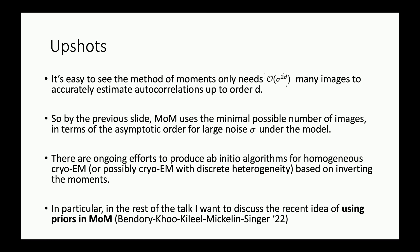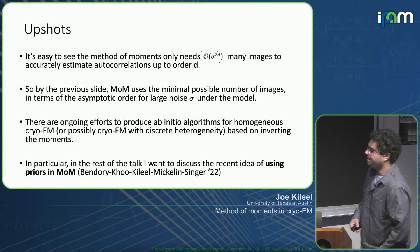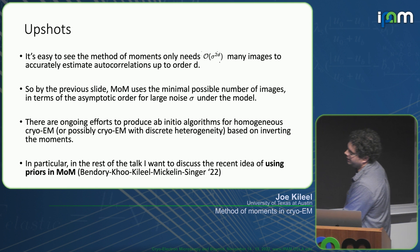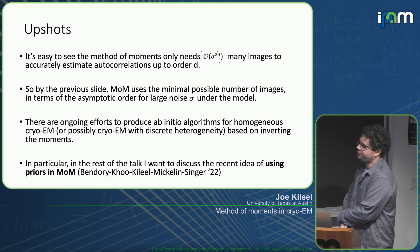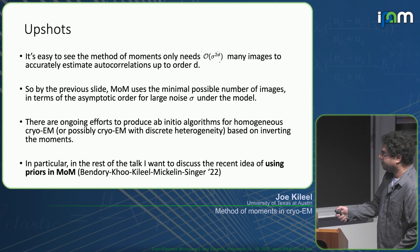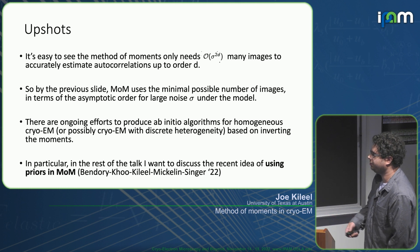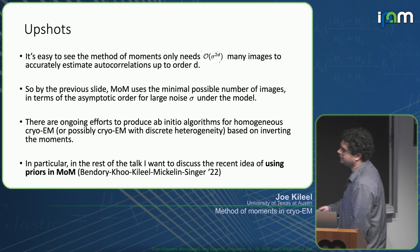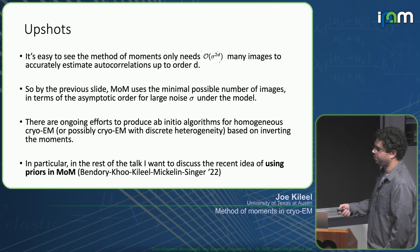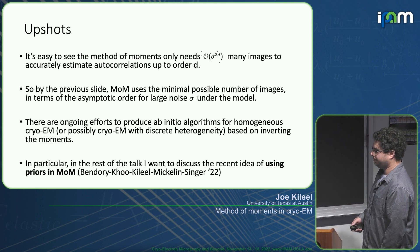The upshots are the following. It's easy to see that the method of moments, which is one estimation procedure, only needs on the order of sigma to the 2D many images. That's how many images it needs to accurately estimate auto correlations up to order D. Therefore by the previous slide, the method of moments in this model uses a minimal possible number of images, at least in terms of the asymptotic order for large noise sigma.